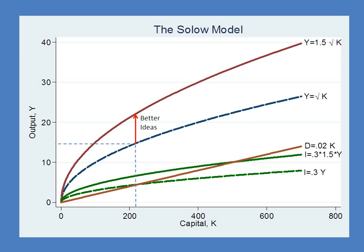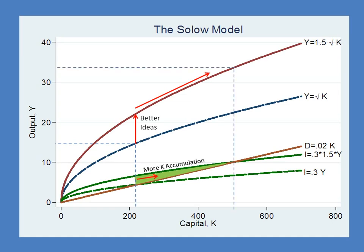More output from the same capital stock means we also have more investment. More output means more investment, and now investment is going to be greater than depreciation. Because investment is greater than depreciation, we get capital accumulation, which increases GDP per capita. So we get two things going on: the initial effect of better ideas increases output, and that secondary effect with higher levels of output for a given capital stock encourages more capital accumulation. We continue accumulating capital until investment equals depreciation — until our capital stock is so large that we're using all of our investment just to maintain the capital stock.